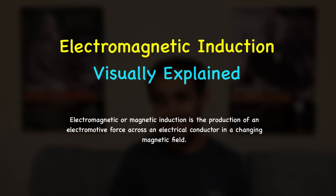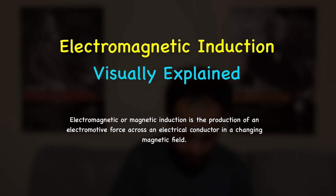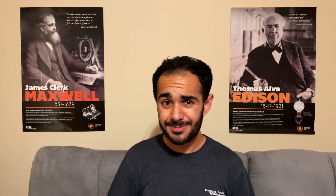The textbook definition of electromagnetic induction is that it's the production of an electromotive force across an electrical conductor in a changing magnetic field. Now my problem with textbooks is that they give you a lot to digest all in one sitting, so let's just break it down in more easy to understand terms.